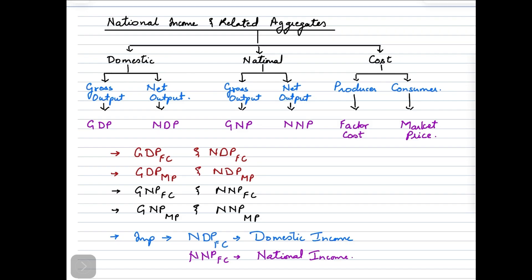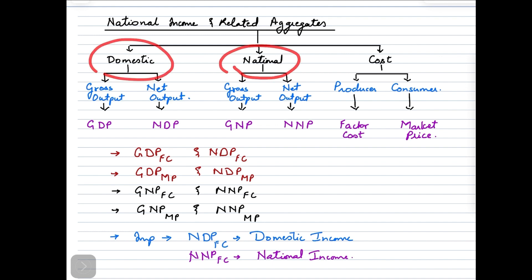When we take a look at national income aggregates, there are basically three major categories that we need to take a look at. The first is the domestic category, the second is the national category, and the third is the cost component.